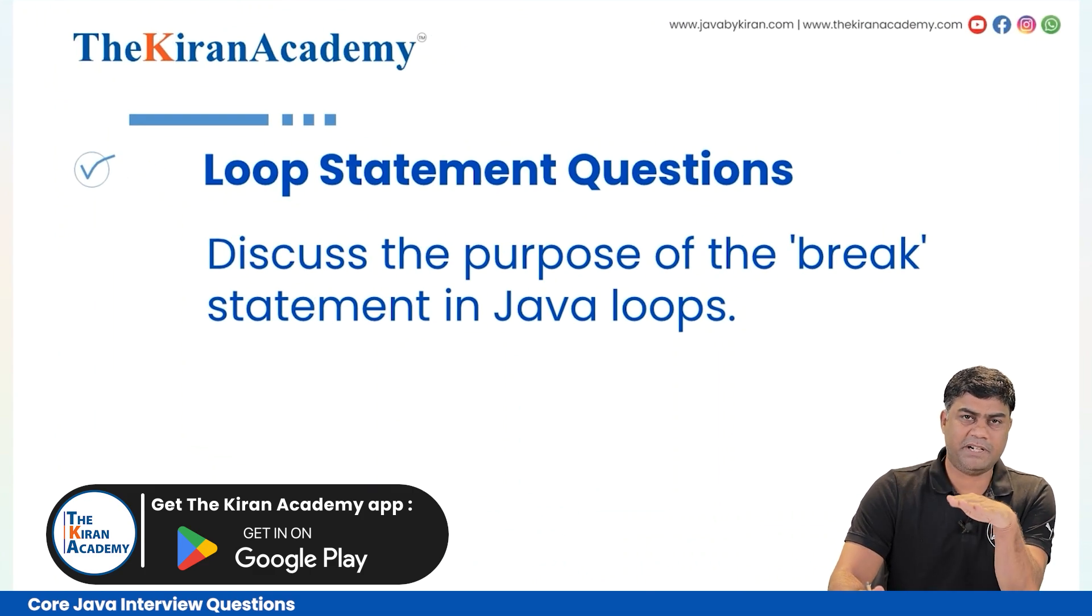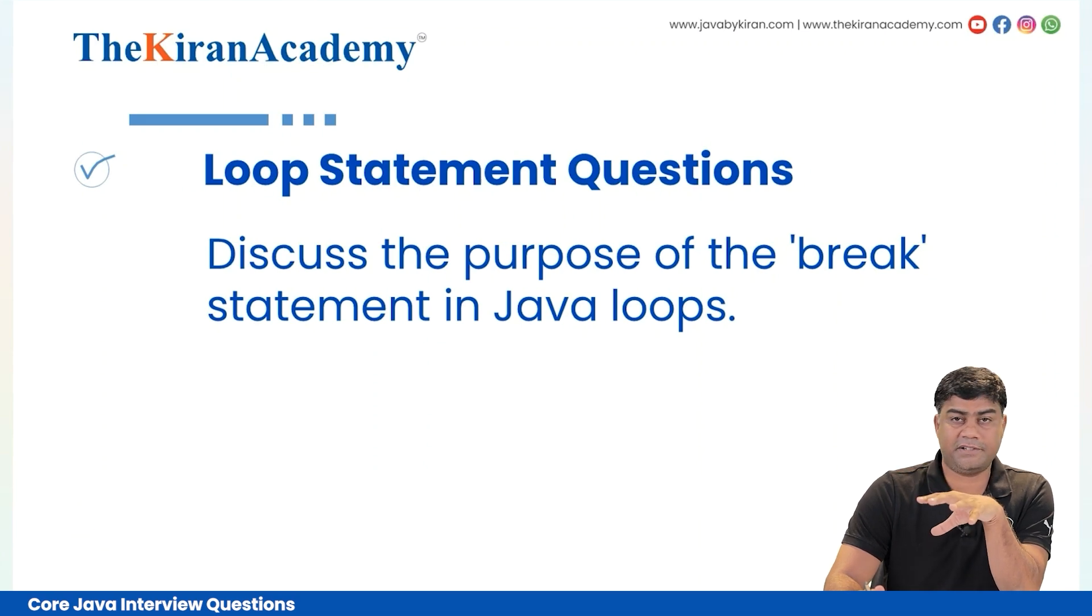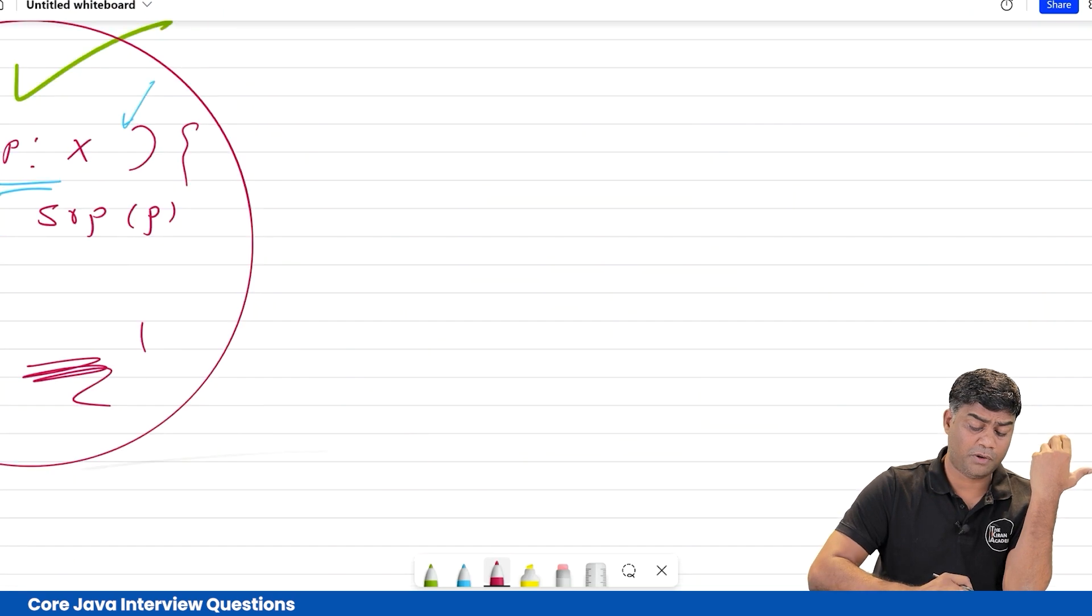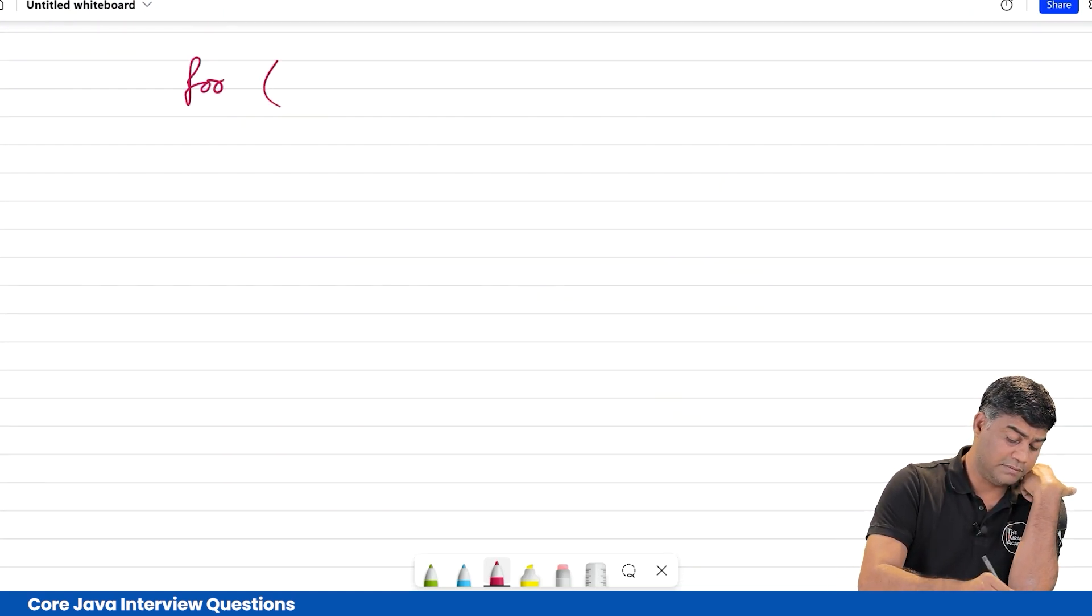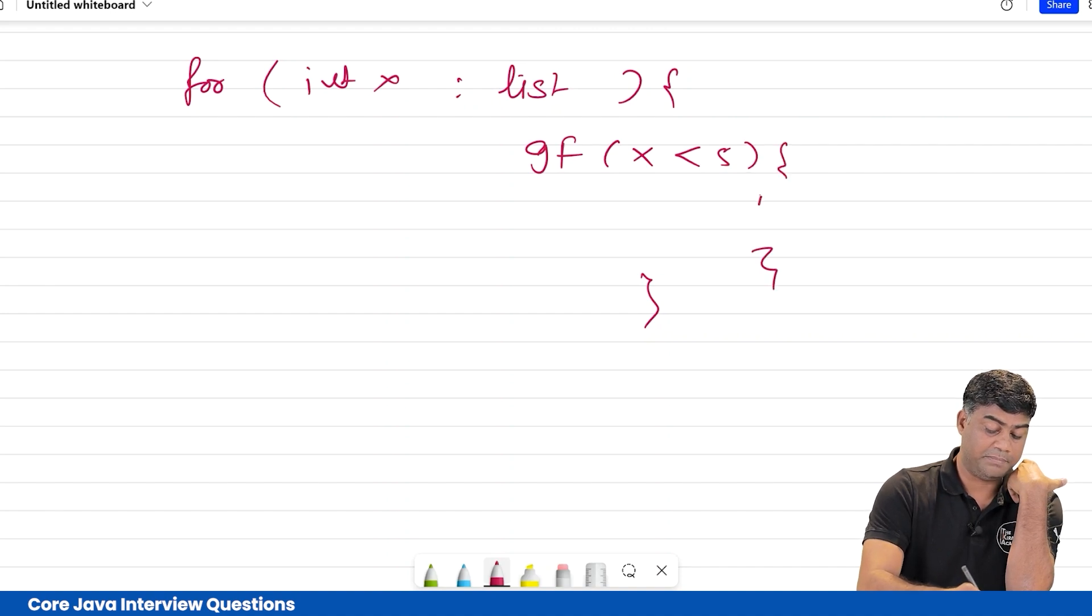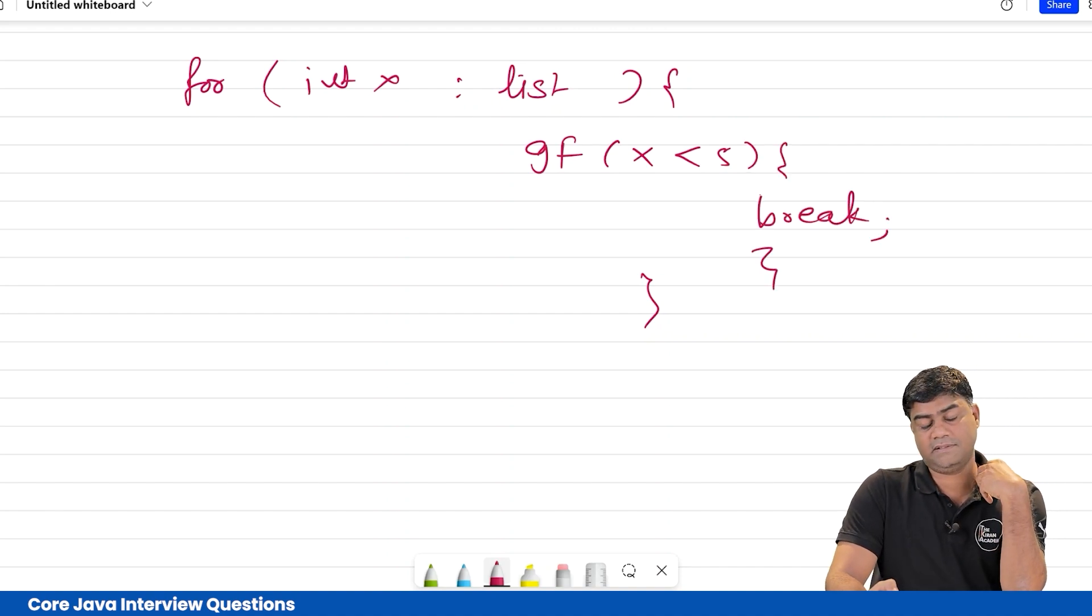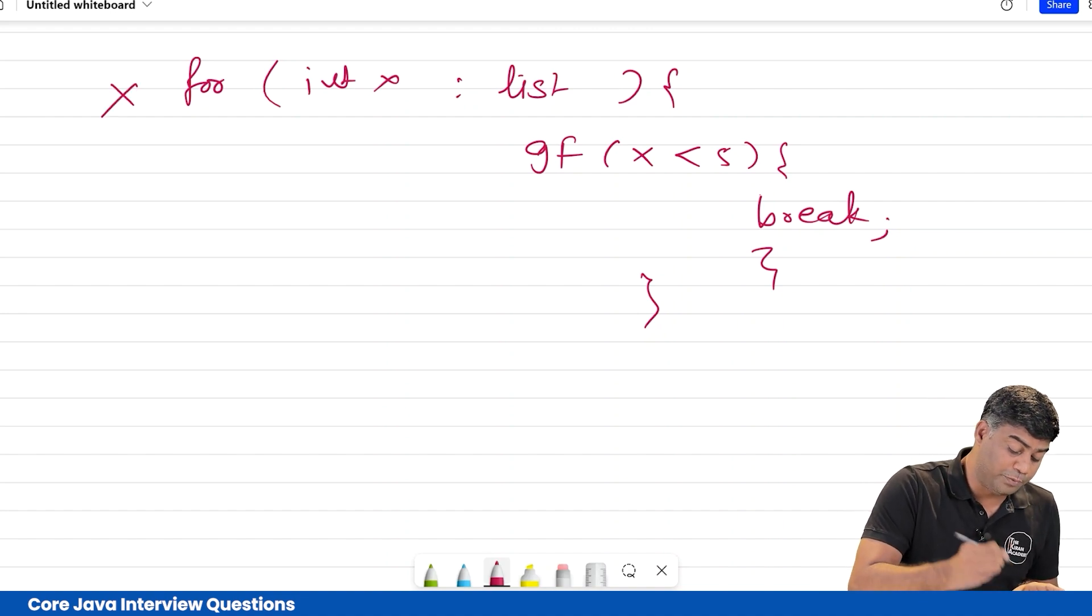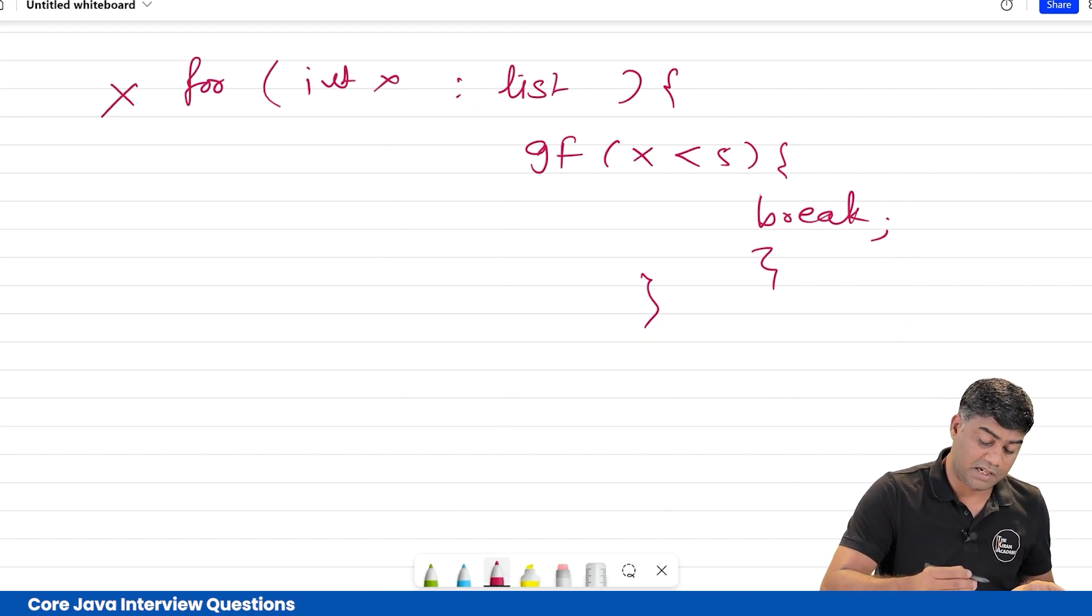Break means terminate - don't go ahead. If you have a for loop, for example, int x colon something list, and if you do like this: if x is less than 5, then break - this means the for loop will get terminated.